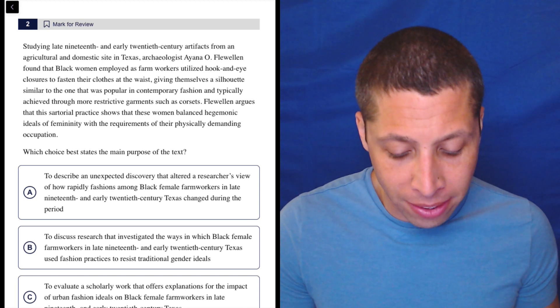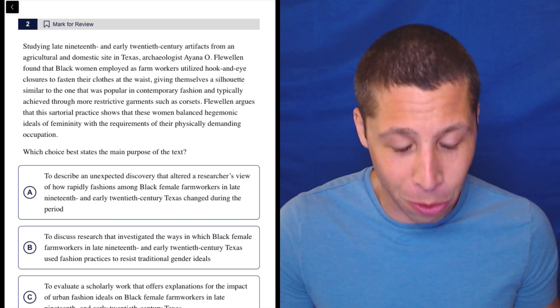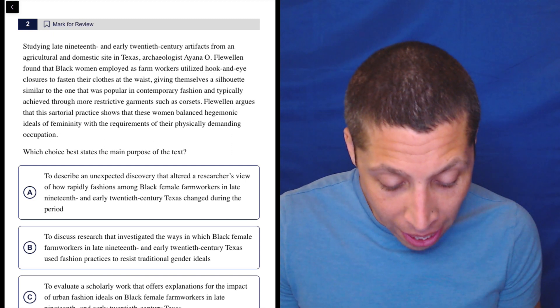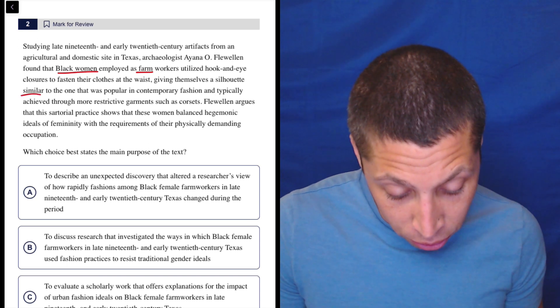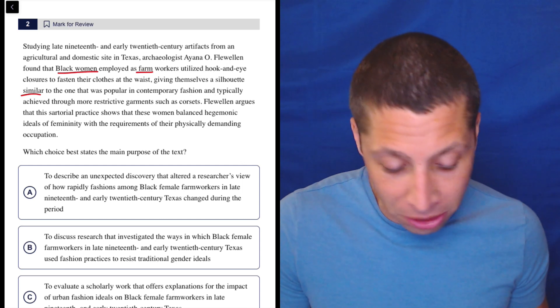giving themselves a silhouette similar to the one that was popular in contemporary fashion and typically achieved through more restrictive garments such as corsets. That's a long sentence, but what I got out of it is black women on the farms are similar to other things. They're similar to something.